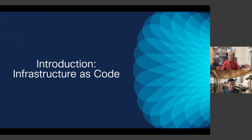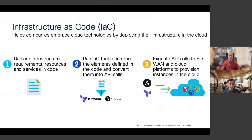Next is Infrastructure as Code. As more companies move to the cloud, Infrastructure as Code has grown more popular, helping companies ease their transition to deploying infrastructure in the cloud. You declare your infrastructure requirements or resources in code — a piece of software, just like any other. Then you use IaC tools such as Terraform and Ansible to interpret those requirements and convert them into API calls, which are then executed against Catalyst SD-WAN and cloud platforms to provision infrastructure.